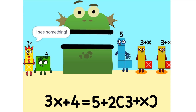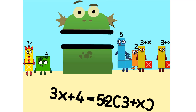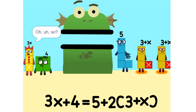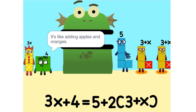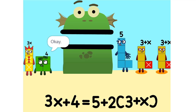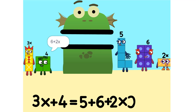I see something. We can add these. Why did that happen? Because the 2 is connected to the 3 plus X. So it's like adding apples and oranges — you can't. So what do we do? See the 2 times 3 plus X? That's the same as 2 times 3 plus 2 times X, which is 6 plus 2X.